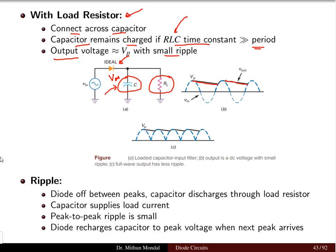This is a half wave rectifier because we are using one diode. In a full wave cycle, there are continuous ripples present at the output. Regarding the ripple: when the diode is off between peaks — peaks appear in each half cycle and rectification produces two peaks per full cycle — the capacitor discharges through the load resistor. The capacitor supplies load current when the diode is off. The peak-to-peak ripple will therefore be small.